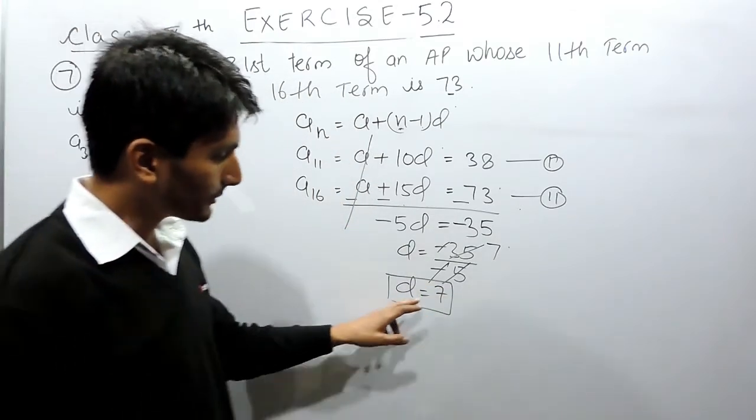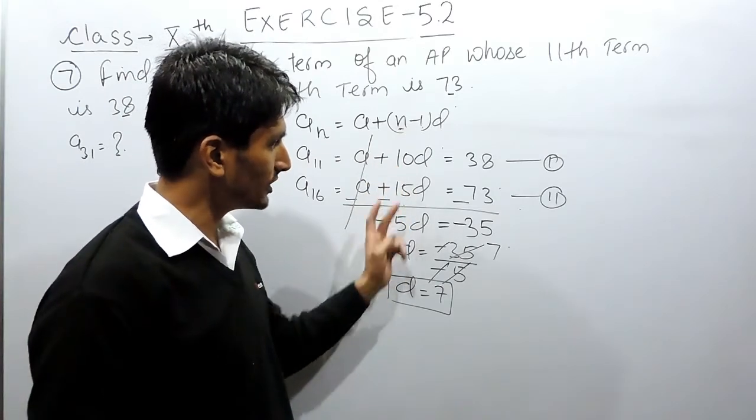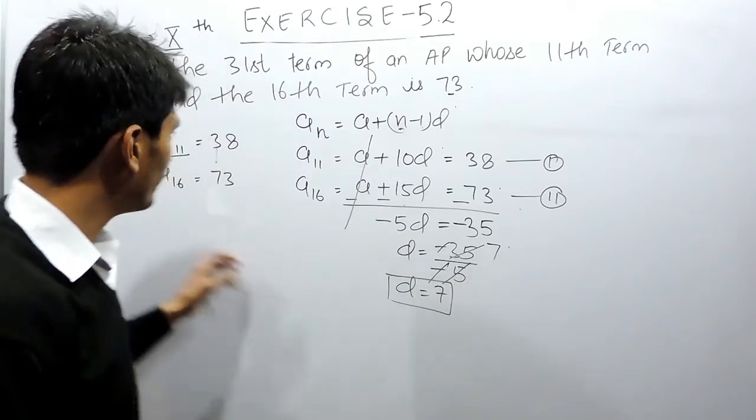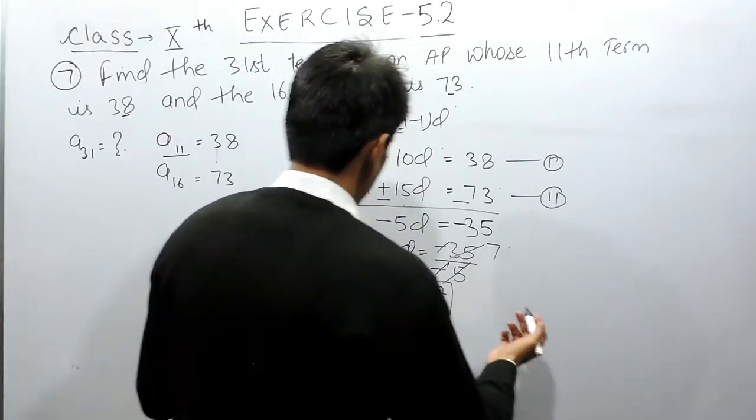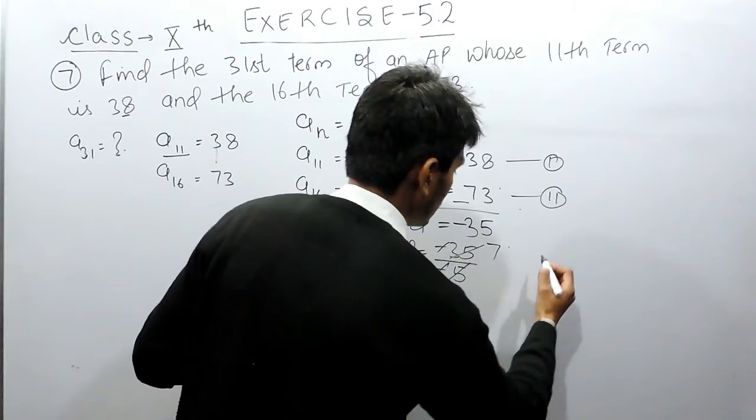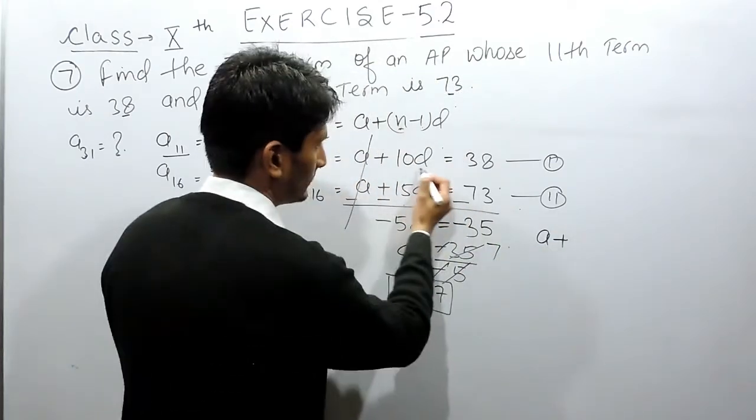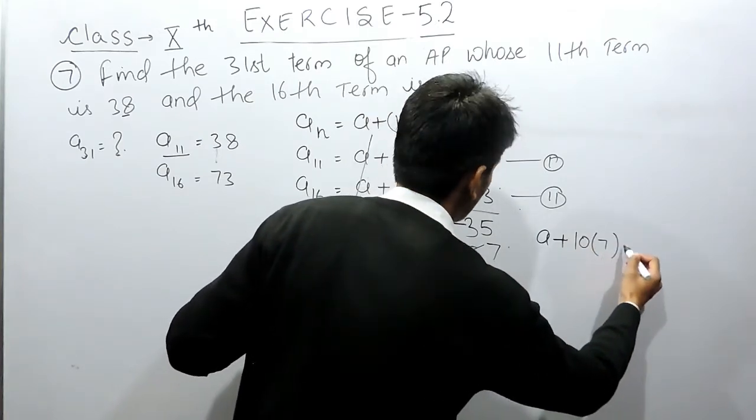Now if I substitute this value of d in any of these two equations I'll get the value of a, and these are the only two values I need to find the 31st term. So if I substitute this value of d in our first equation, so a plus the value of d here is 7, and this is 38.